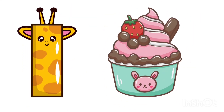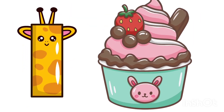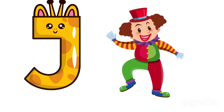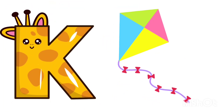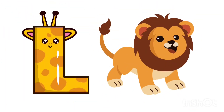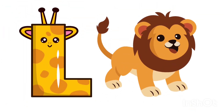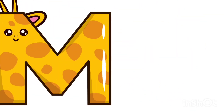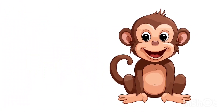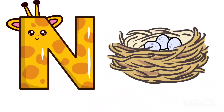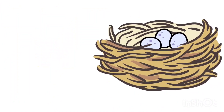I for ice cream, J for joker, K for kite, L for lion, M for monkey, N for nest, O for ox.